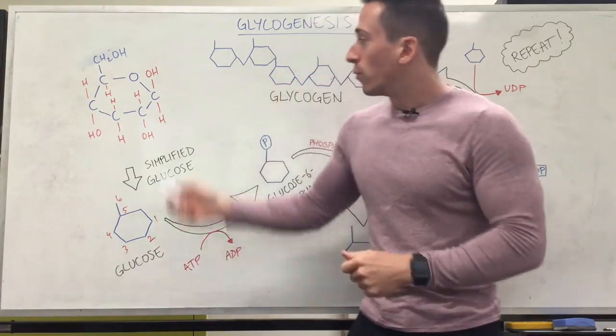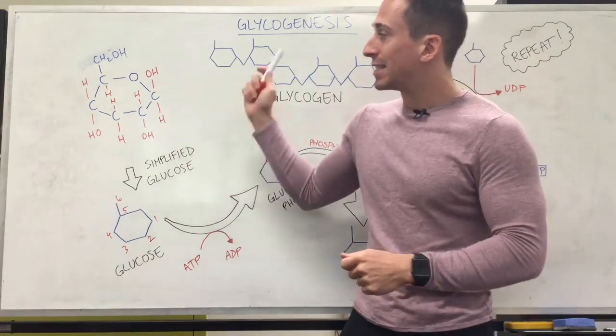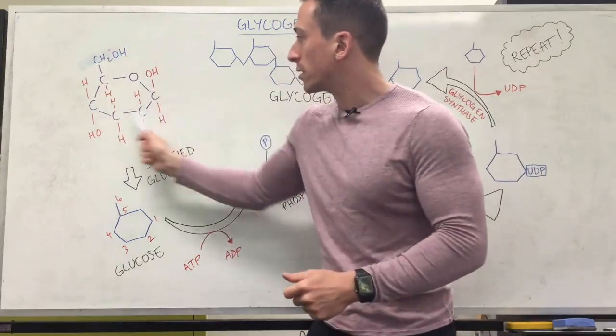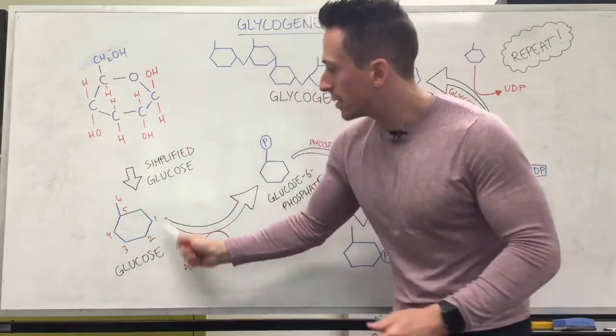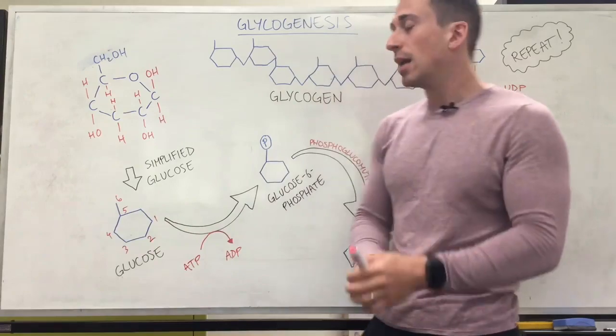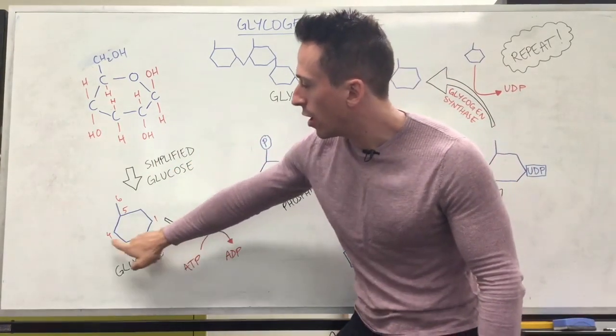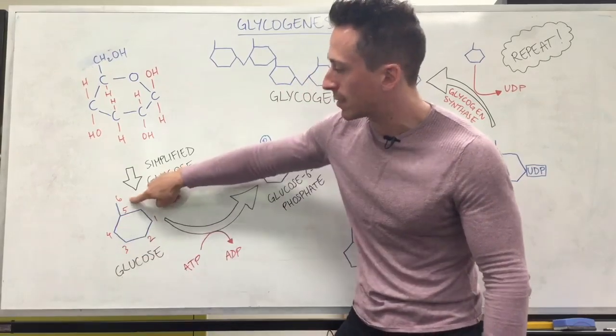So we've got glucose. You can see that there's six carbon, 12 hydrogen, six oxygen, and I'm going to simplify this ring-shaped structure of glucose into this structure. And you can also see that I've labeled the six carbons. That's where the first carbon is, second, third, fourth carbon, fifth carbon, and sixth carbon.